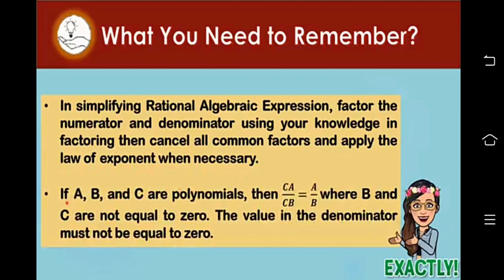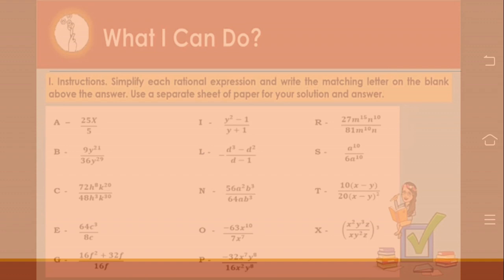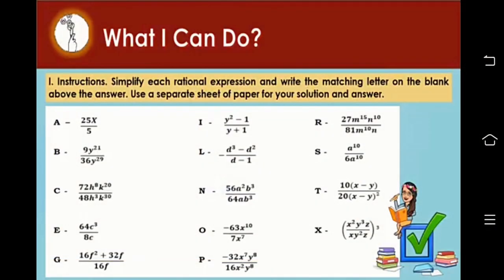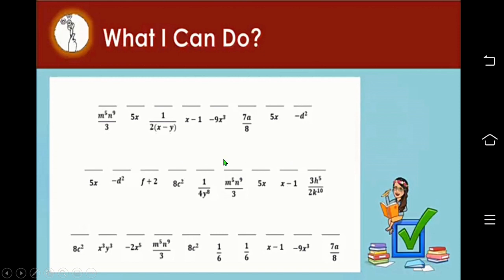Here's what you can do. Simplify each rational expression and write the matching letter on the blank above the answer. Use a separate sheet of paper for your solution and answer. You have 14 numbers to work on — that's a lot! Then you're going to put the answers here, and the corresponding letters will be written on top.